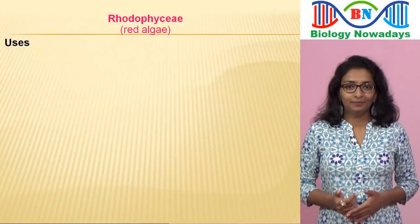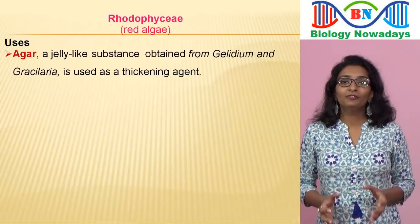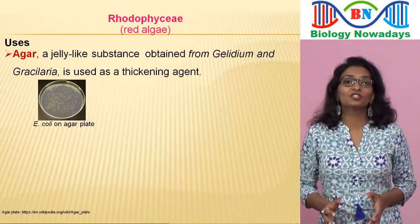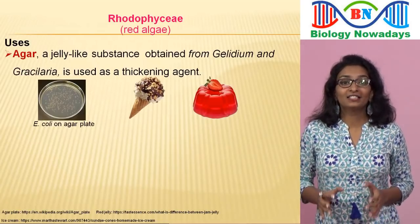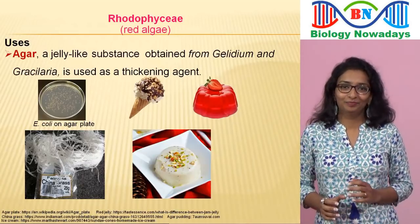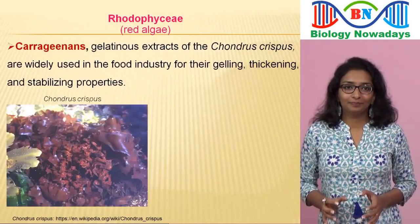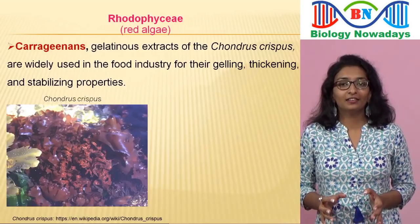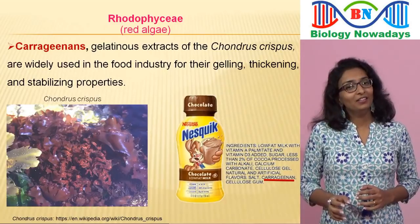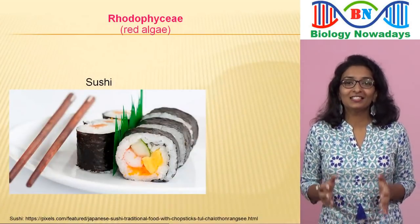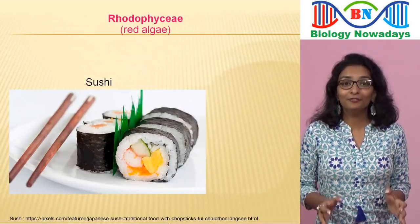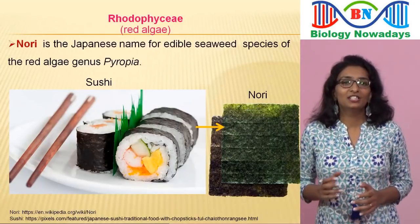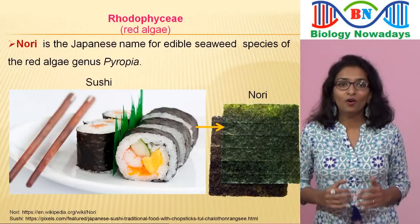Now let's see the uses of red algae. Agar, a jelly-like substance obtained from Gelidium and Gracilaria, is used as a thickening agent in bacterial cultures and preparations of ice creams and jellies. In Indian cuisine it is known as China grass and used for making desserts like pudding. Another substance called carrageenan, extracted from Chondrus crispus, is commonly used as a thickening and stabilising agent in milk products like chocolate milk and some processed foods. Also, sushi — a Japanese dish of rice with seafoods and vegetables — is wrapped in nori sheets made of algae. Nori is the Japanese name for edible seaweed species of the red algae genus Pyropia.